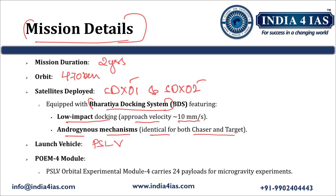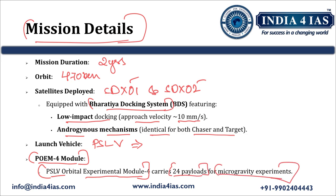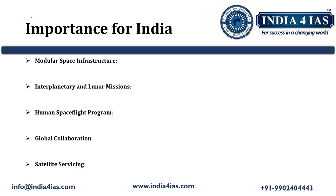The launch vehicle is PSLV — Polar Satellite Launch Vehicle. We should remember it is not GSLV. Along with this, the mission also has the POEM-4 module — PSLV Orbital Experimental Module 4 — which carries 24 payloads for microgravity experiments.